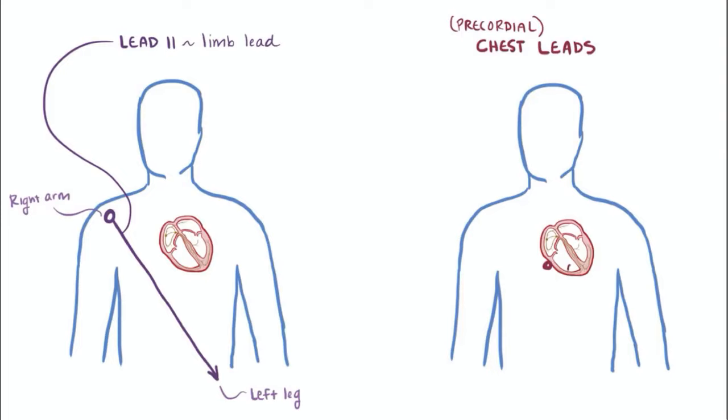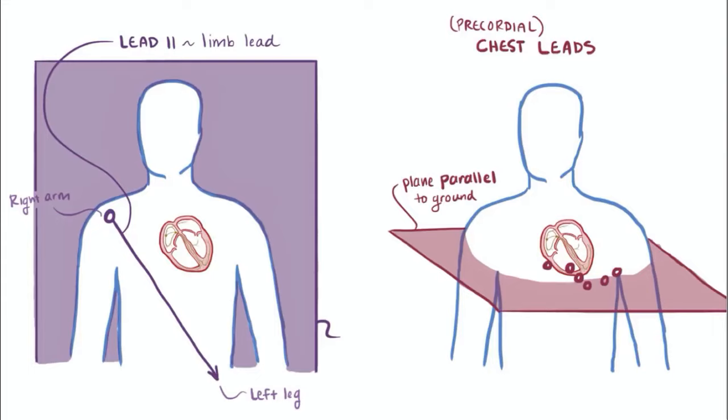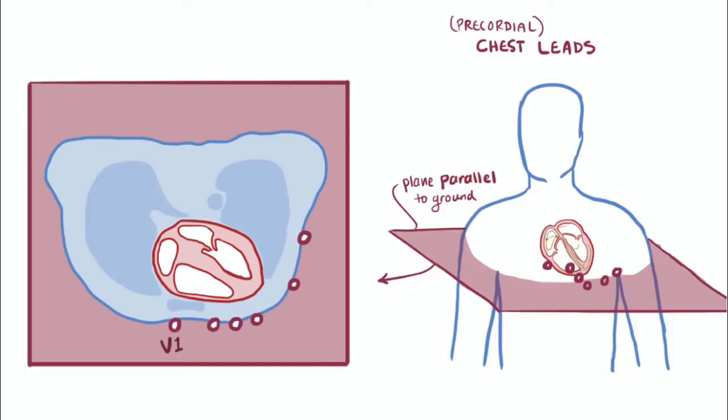The chest or precordial leads are really useful for doing just that. Chest leads look at the heart's electrical activity when viewed from a slice parallel with the ground, so it's a bit different from the limb leads, which look at the heart in the frontal plane, which is perpendicular to the ground. For chest leads, they go from V1 coming straight out the front of the chest to V6 going out the left side of the chest. Each of these is like looking at the heart from a different perspective.